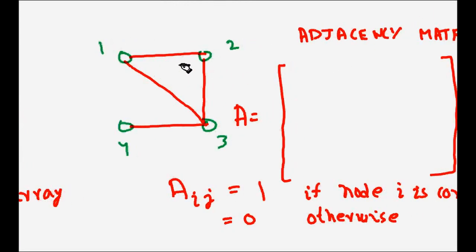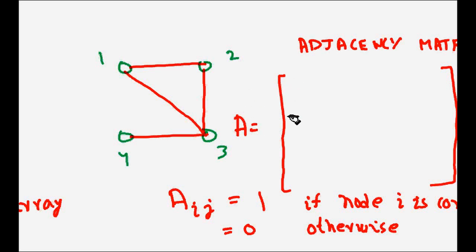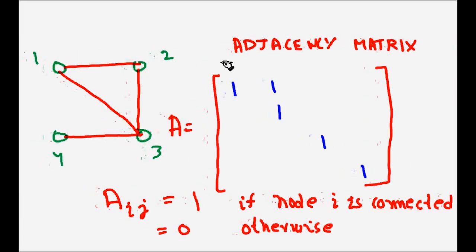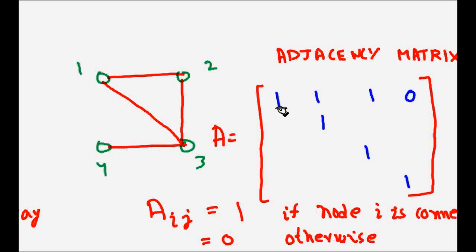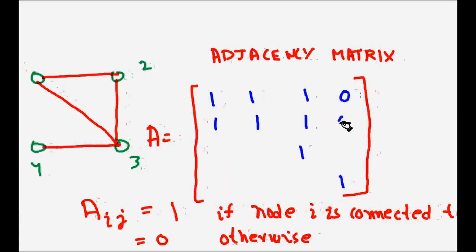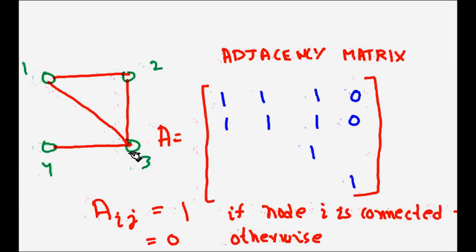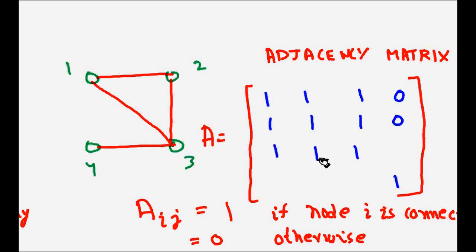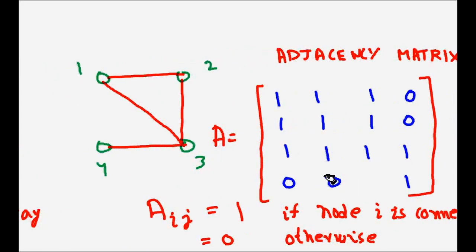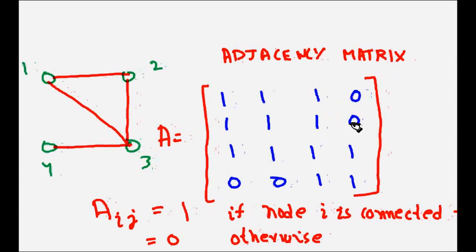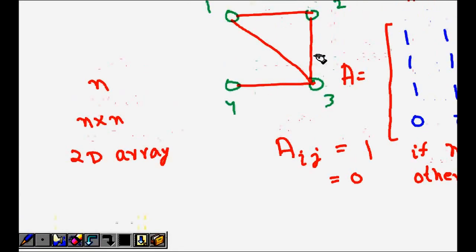Let's fill in the adjacency matrix. Node 1 is connected to itself, so all diagonal entries are 1. Node 1 is connected to 2 (entry [1,2] = 1), and to 3 ([1,3] = 1), but not to 4 ([1,4] = 0). Since this is an undirected graph, [2,1] = 1 as well. [2,2] = 1, [2,3] = 1, [2,4] = 0. For node 3: [3,1] = 1, [3,2] = 1, [3,4] = 1. Node 4 is not connected to 1 or 2 but is connected to 3.